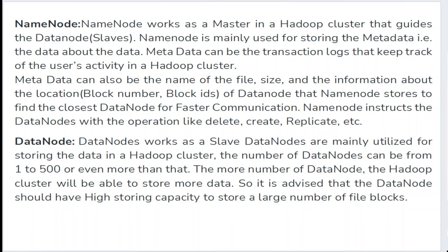The NameNode instructs the DataNodes with operations like delete, create, or replication. DataNodes work as slave nodes, mainly utilized for storing data in a Hadoop cluster. The number of DataNodes can range from 1 to 500 or even more. The more DataNodes there are, the more data the Hadoop cluster can store.